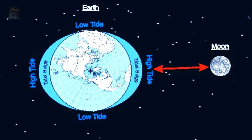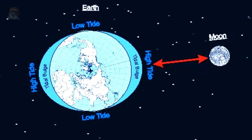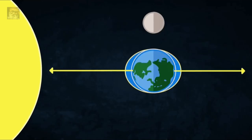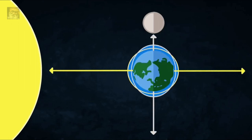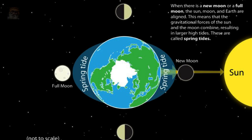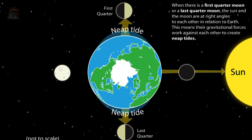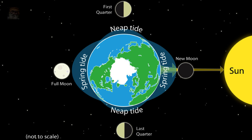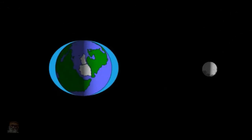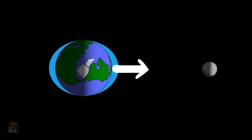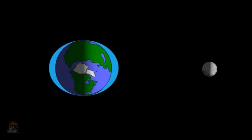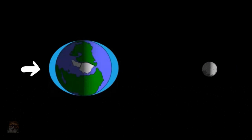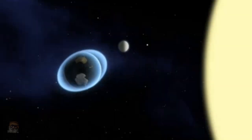The moon's tidal force has a much greater effect on the surface of the ocean. Water is liquid and can respond to gravity more dramatically. The tidal force exerted by the moon is strongest on the side of the earth facing the moon and weakest on the side of the earth facing the opposite direction. These differences in gravitational forces allow the ocean to bulge outwards in two places at the same time. One bulge occurs on the side of the earth facing the moon — this is the moon's direct tidal force pulling the ocean towards it. The other bulge occurs on the opposite side of the earth, where the ocean bulges in the opposite direction of the moon.